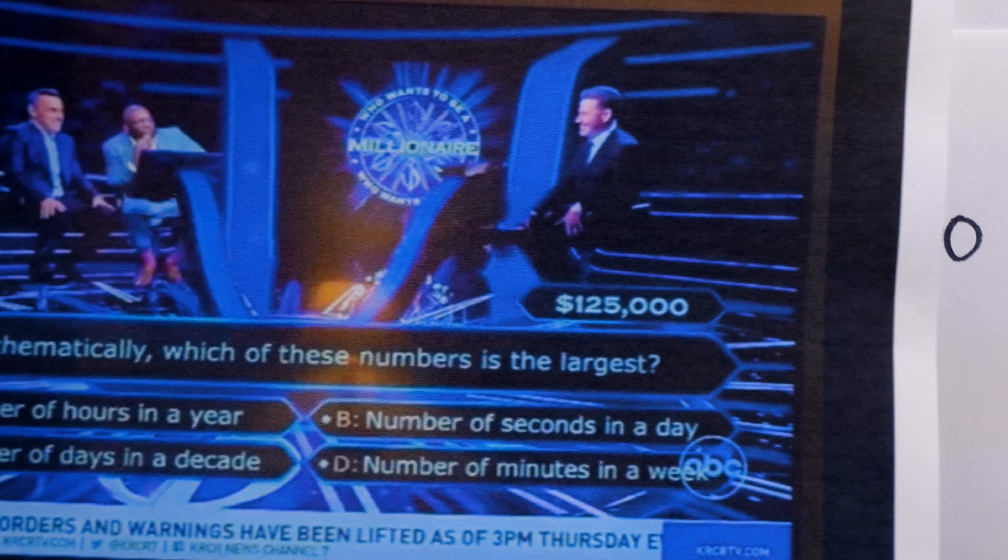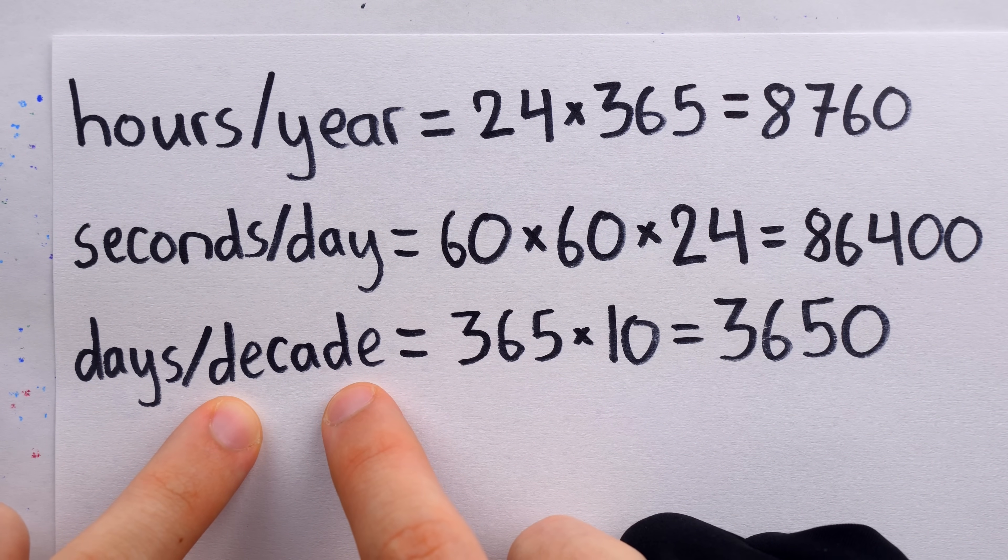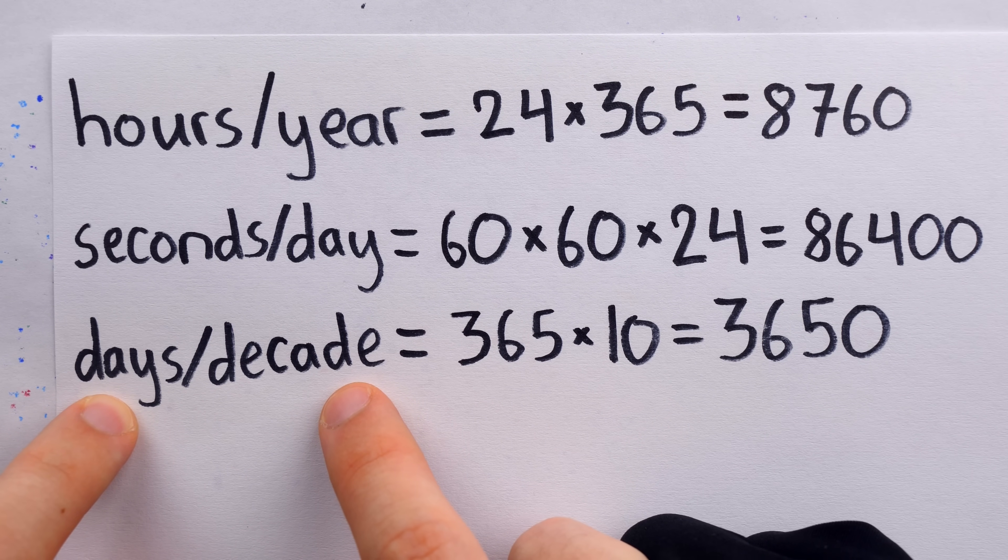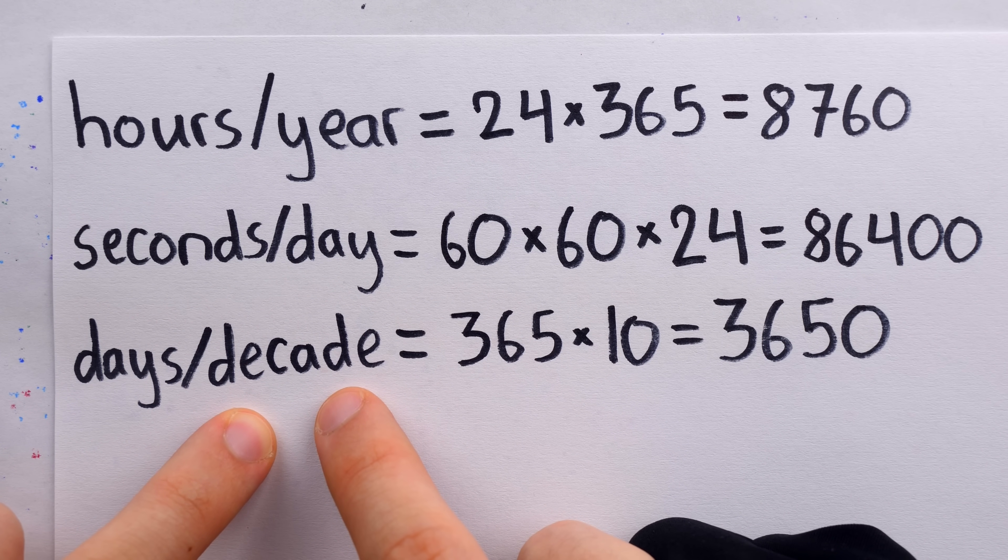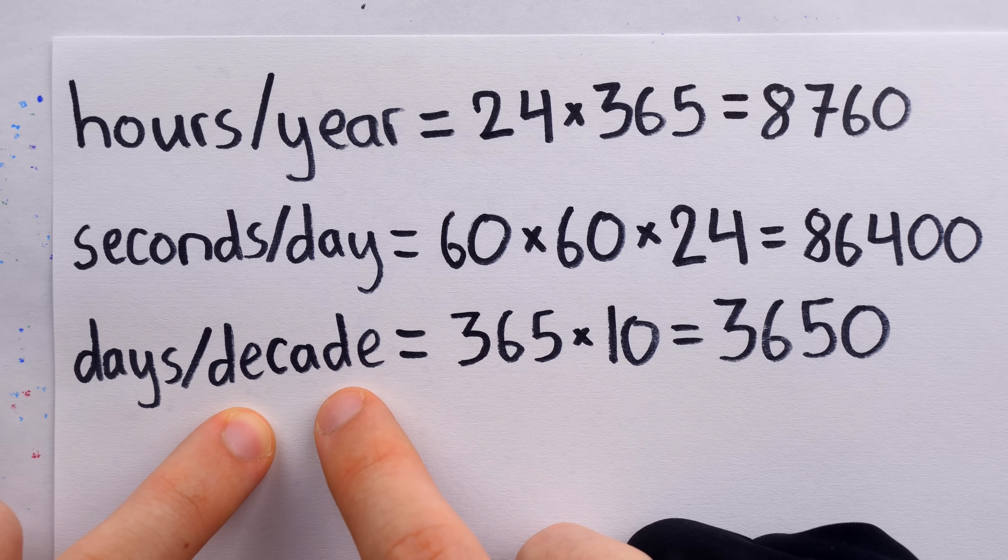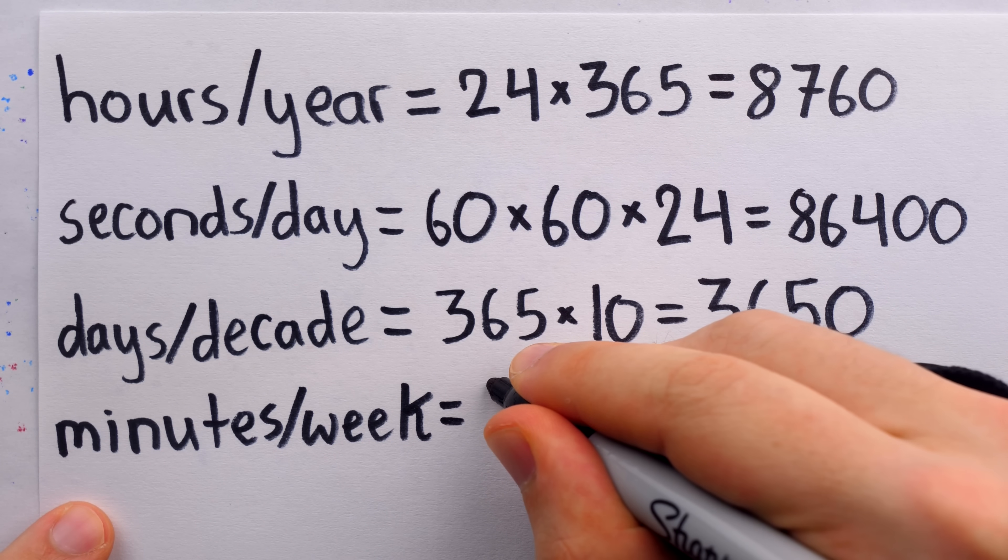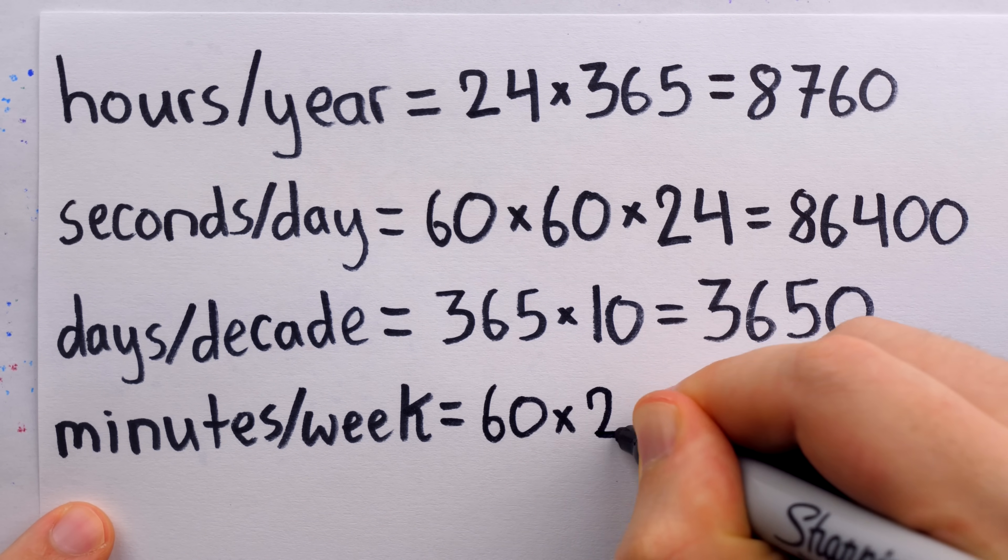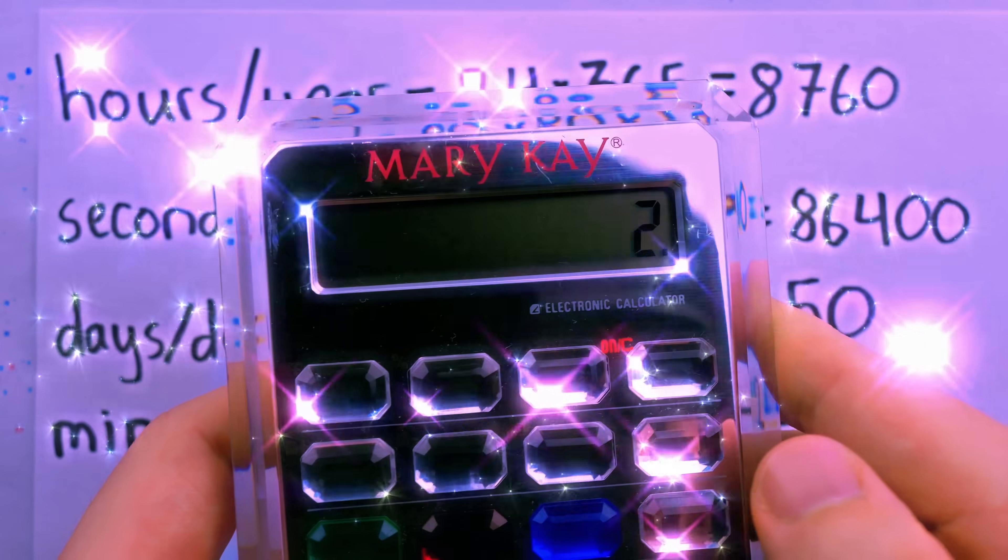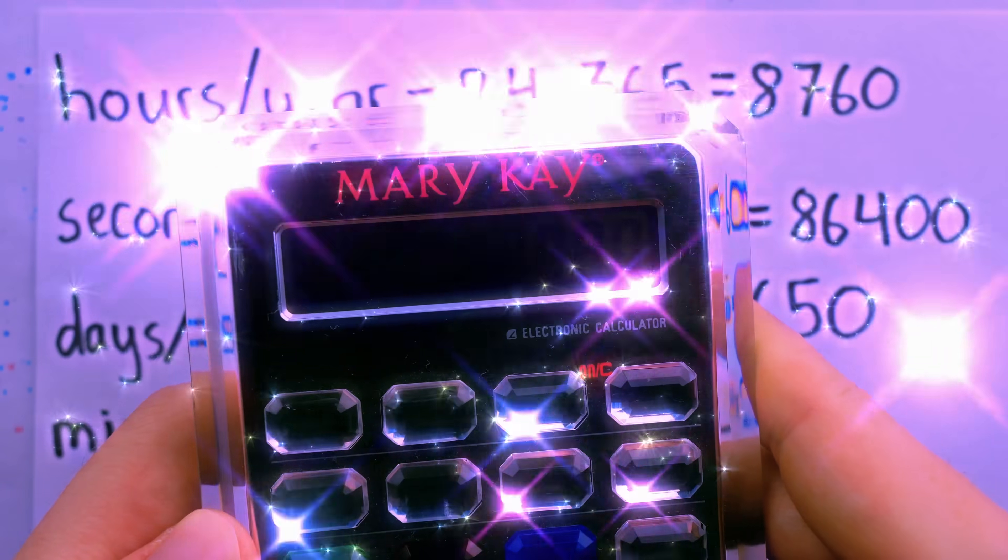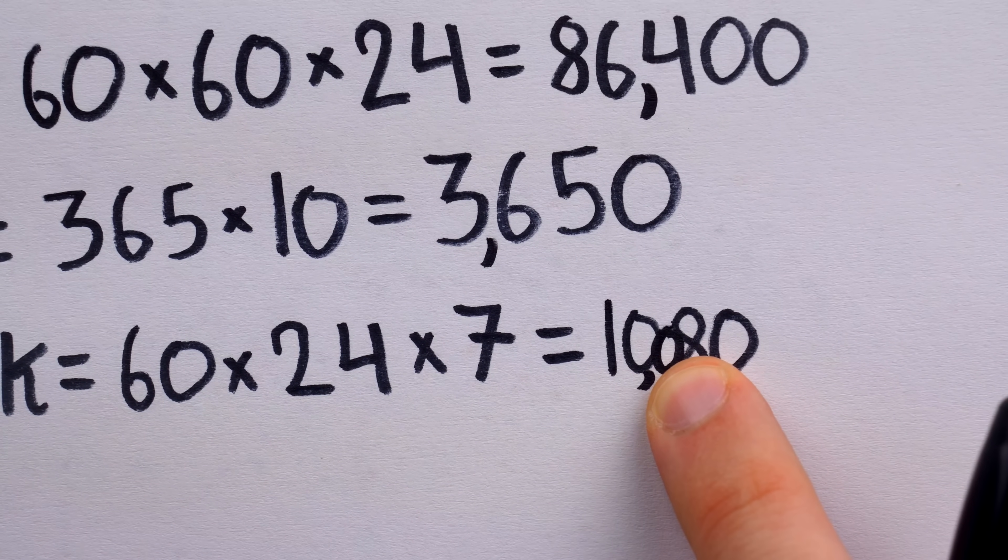We're not taking leap years into account here, because they're not significantly going to change the numbers. Indeed, if the question actually wanted us to take leap years into account, it would have to tell us, for example, what decade we're counting the number of days over, since different spans of 10 years will have different numbers of days, depending on how many leap years are in that 10-year span. Finally, answer choice D is the number of minutes in a week. To calculate this, we take 60, the number of minutes in an hour, multiply by 24, the number of hours in a day, and then multiply by 7, the number of days in a week. And doing the multiplication here, we see that this comes out to a total of 10,080 minutes. Please forgive me for having to squeeze that zero in there.